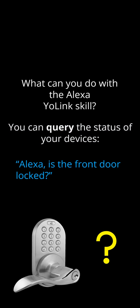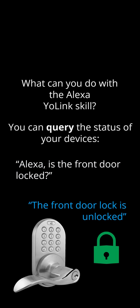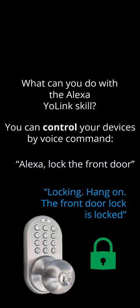For example, ask: "Alexa, is the front door locked?" Alexa responds: "Checking, hang on — the front door lock is locked." You can also control your devices by voice command. For example: "Alexa, lock the front door." Alexa responds: "Locking, hang on — the front door lock is locked."